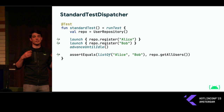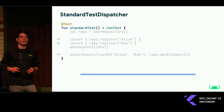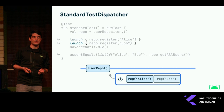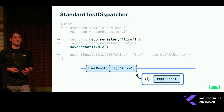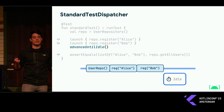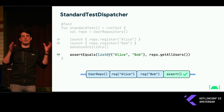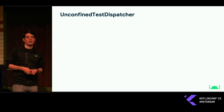We'll do the simplest thing and call AdvanceUntilIdle. Running the test again, we'll first create the repo, perform the two launches which queue up two coroutines on the scheduler. As we get into AdvanceUntilIdle, it starts picking up tasks from the scheduler and executing them — first registering Alice, then Bob. Now that the scheduler is idle, AdvanceUntilIdle returns, we get to our assertion, and it is successful because we've now actually registered the users before asserting.